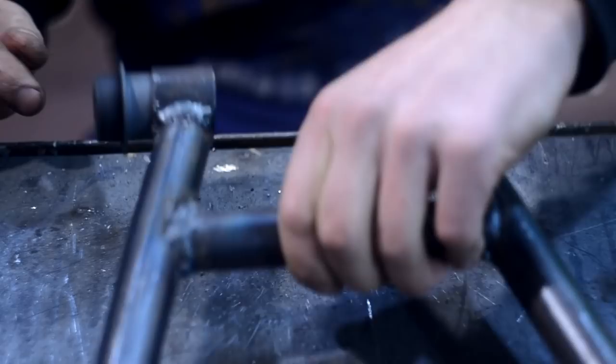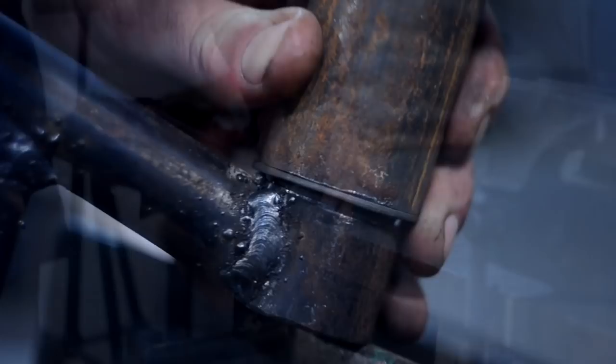For the axle I used standard bushings. I hammered them with a spacer made from the tube.